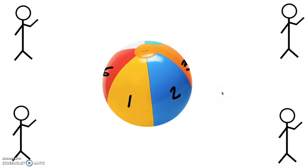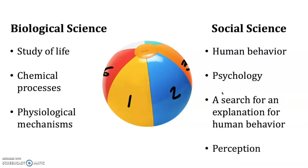The next thing I'm going to introduce is that there are two different types of science that impact genetically modified organisms and the acceptance of them. On the left we have biological science — the study of life, chemical processes, physiological mechanisms, the things you've studied in biology class like mitosis and photosynthesis. The creation of genetically modified organisms is the result of biological science. The research and study of GMOs by the USDA, the EPA, and the FDA uses biological science to determine that the genetically modified seeds available on the market today are safe for the environment and safe for consumers.